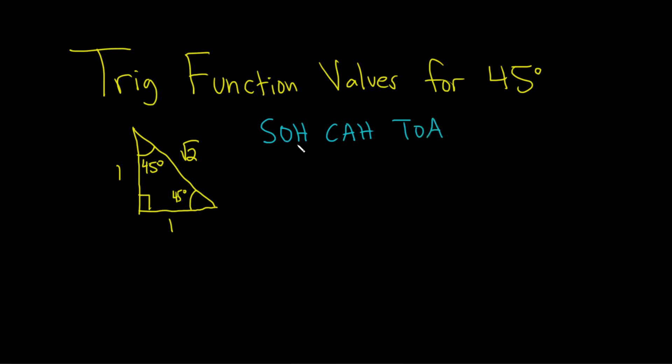SOH means opposite over hypotenuse, CAH means cosine is adjacent over hypotenuse, TOA means tangent is opposite over adjacent. So sine will be opposite over hypotenuse.